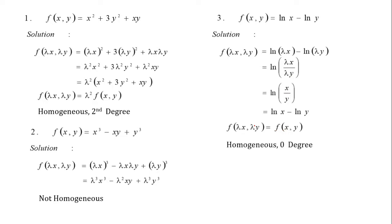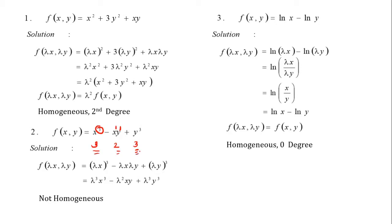Based on the definition, we can identify whether f(x,y) is homogeneous by checking the degree of each term. For x² + 3y² + xy: x² has degree 2, y² has degree 2, and xy has degree 1+1=2 — all equal, so it is homogeneous of degree 2. For x³ - xy + y³: degrees are 3, 2, and 3 — not all equal, confirming it is not homogeneous.